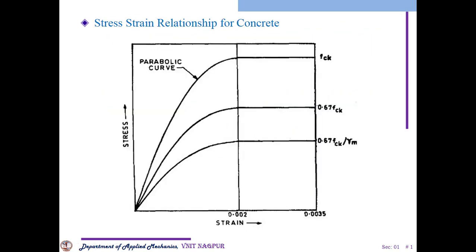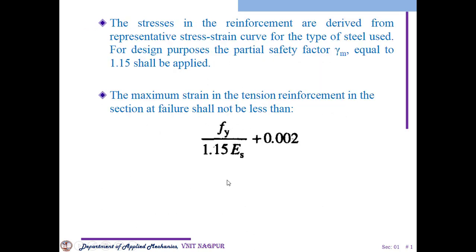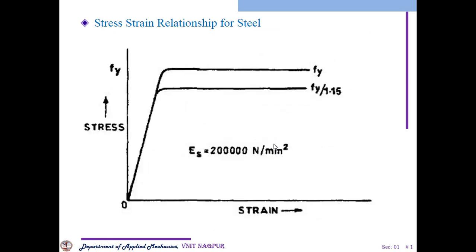If your section is not withstanding this condition, then you will lose your tensile reinforcement and your section will fail. Fy is your stress and 1.15 is the partial safety factor and 0.002 is the strain factor. Now you can see the stress-strain relationship of steel, which reflects that as stresses increase, strain also increases.